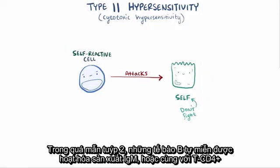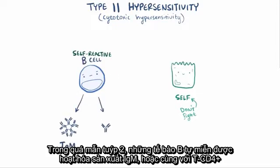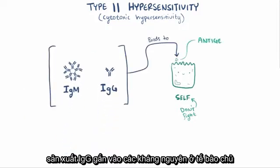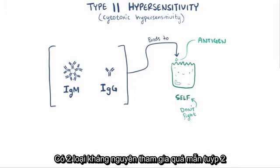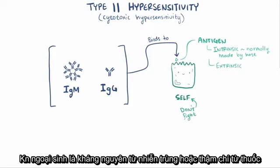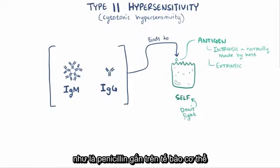In type 2 hypersensitivity, escaped self-reactive B cells become activated and produce IgM, or with the help of CD4-positive T helper cells, IgG antibodies that attach to antigens on host cells. There are two types of antigens involved: intrinsic, meaning an antigen that the host cell normally makes, or extrinsic, which is an antigen from an infection or even some medications like penicillin that gets attached to the host cell.